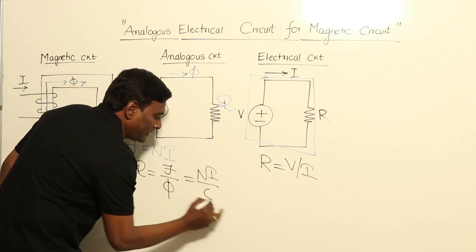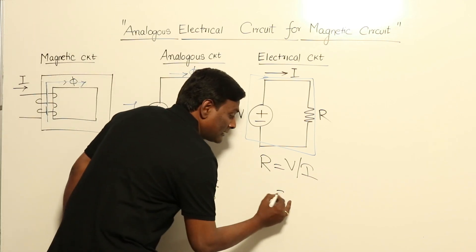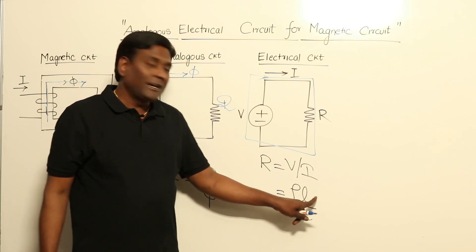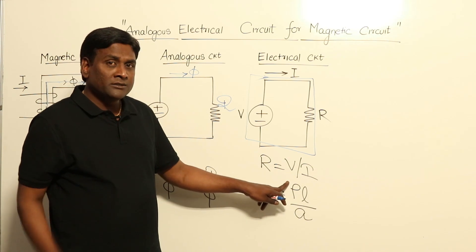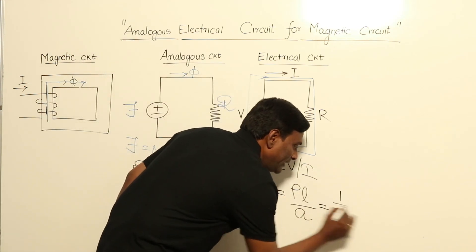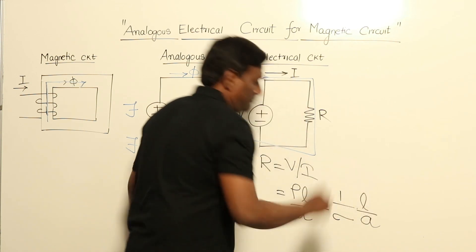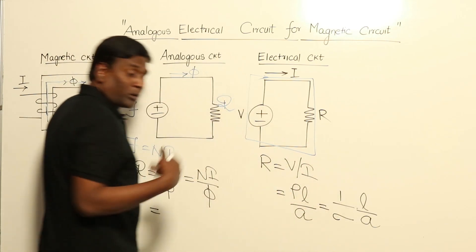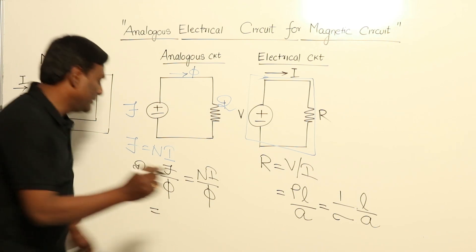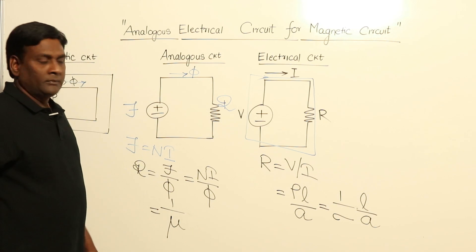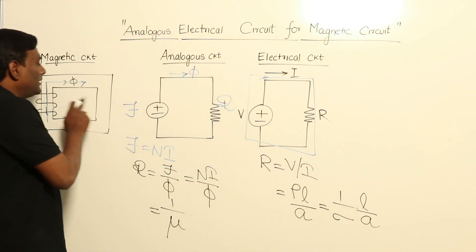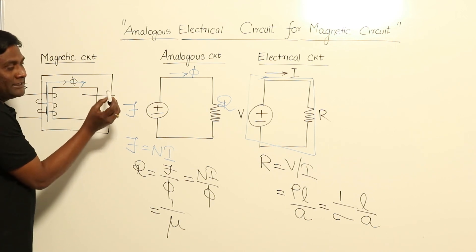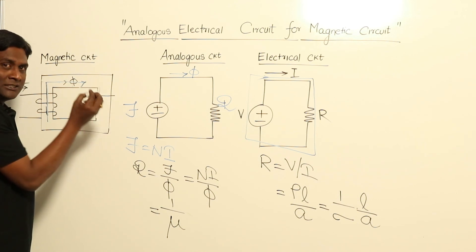Reluctance equals NI divided by φ. For resistance in an electrical conductor, R = ρL/A, where ρ is resistivity and L/A is length over cross-sectional area of the current path. Converting resistivity to conductivity: R = (1/σ)·(L/A). Similarly, for reluctance, the allowing property is permeability μ, so reluctance = (1/μ)·(L/A), where L is the length of the flux path and A is the cross-sectional area of the core.